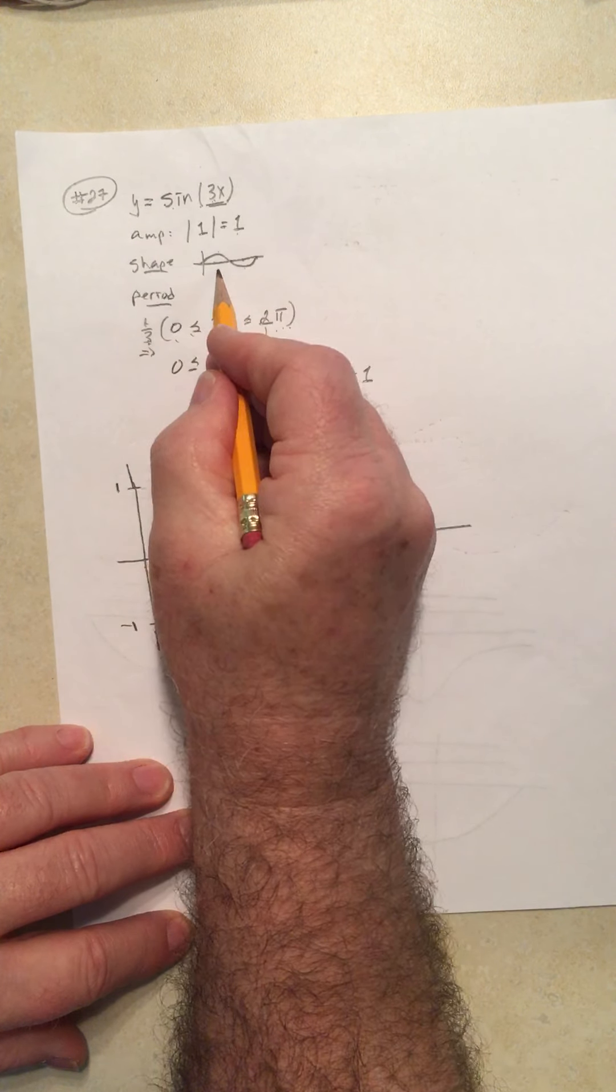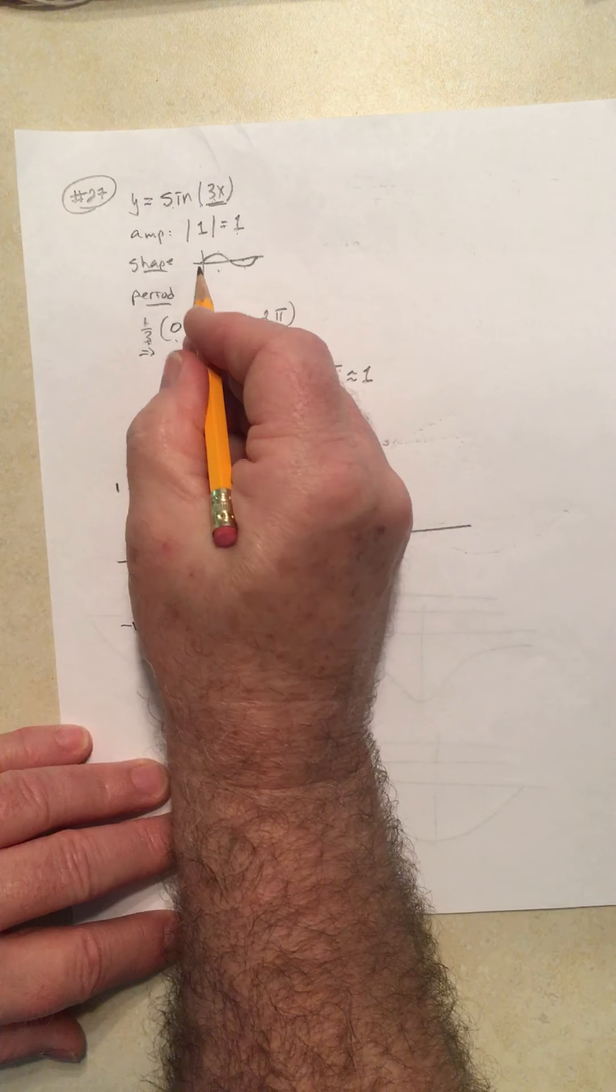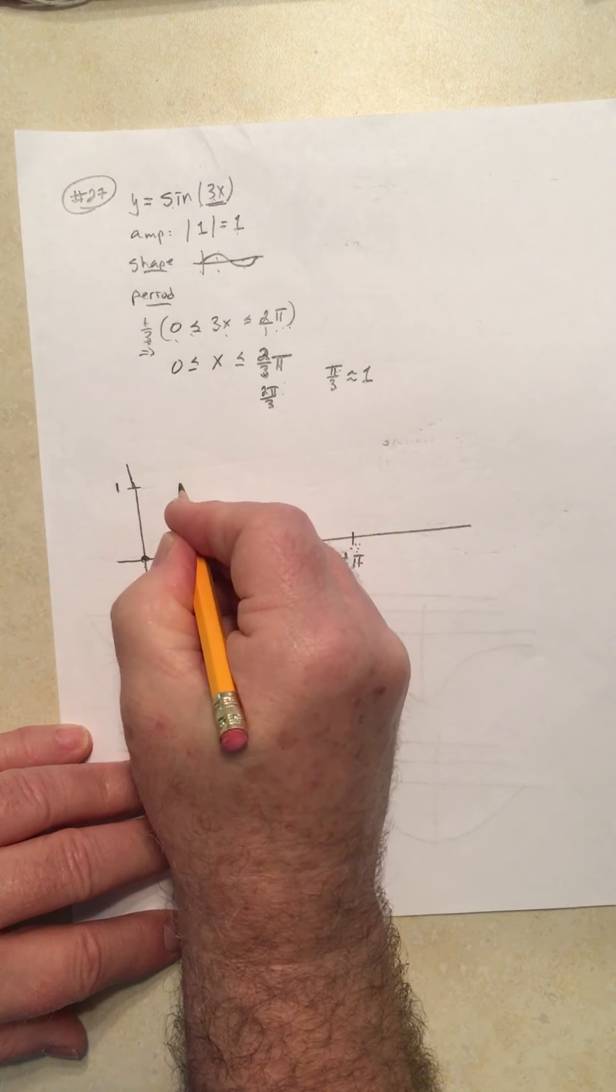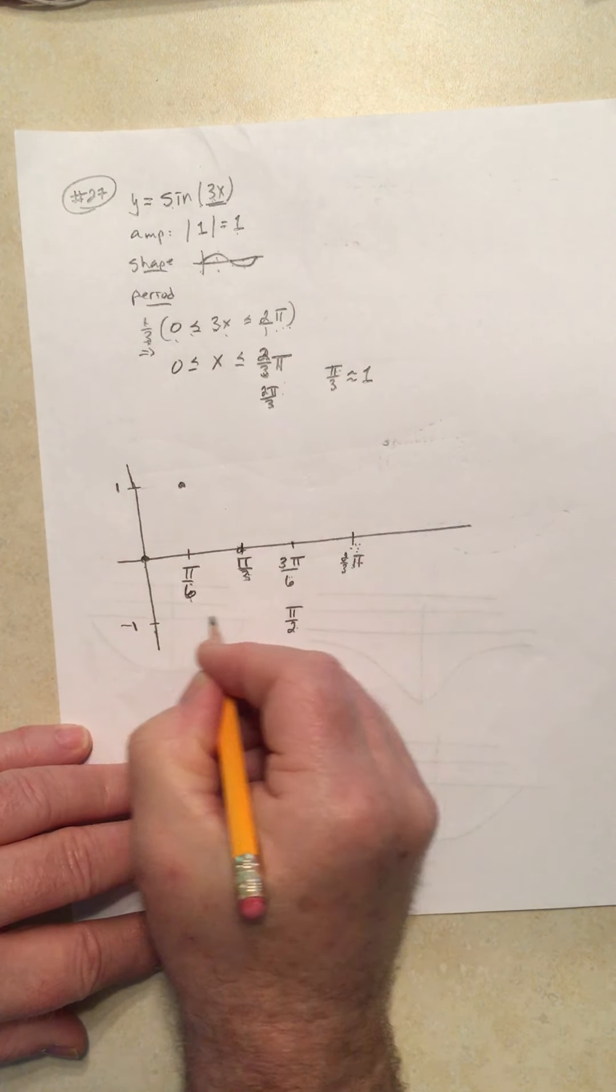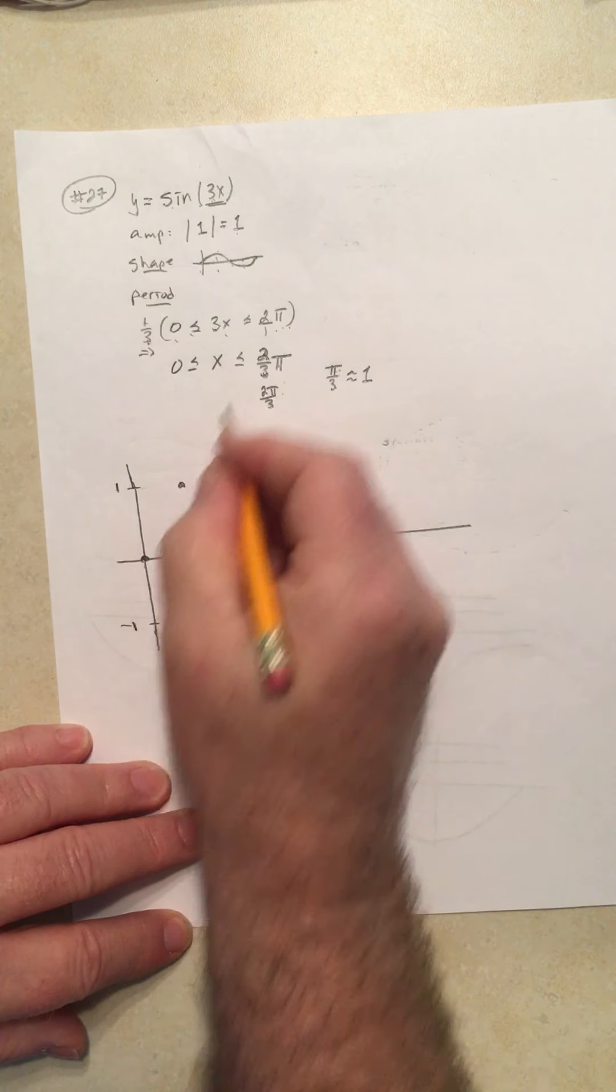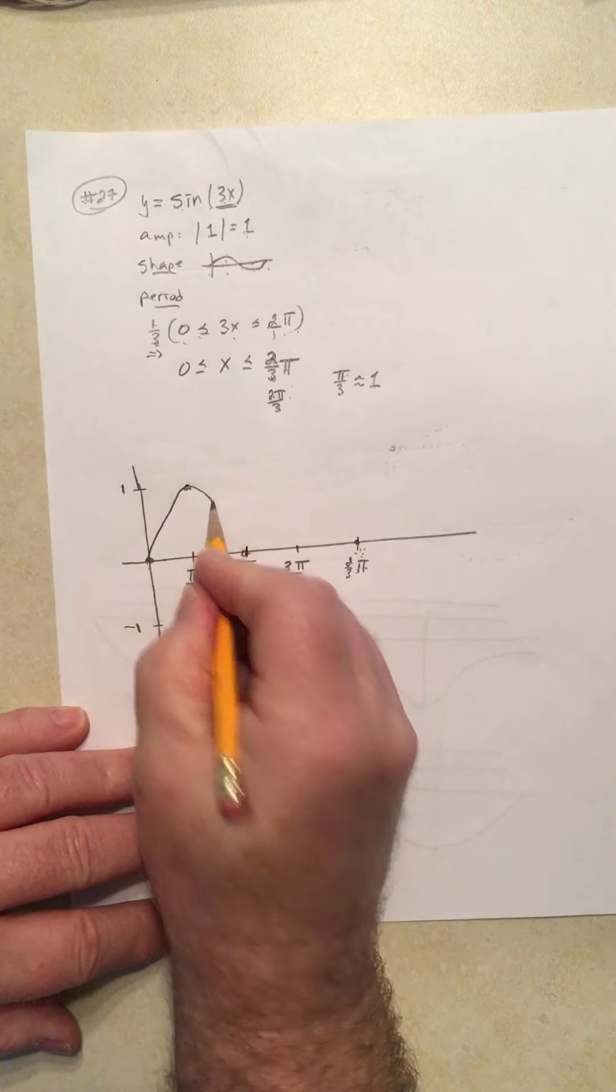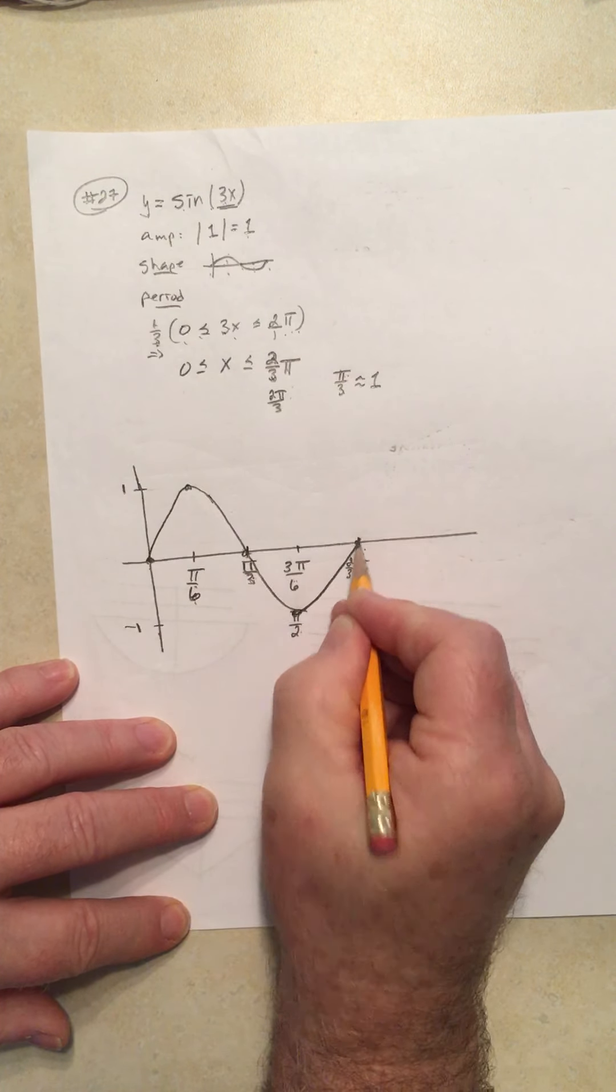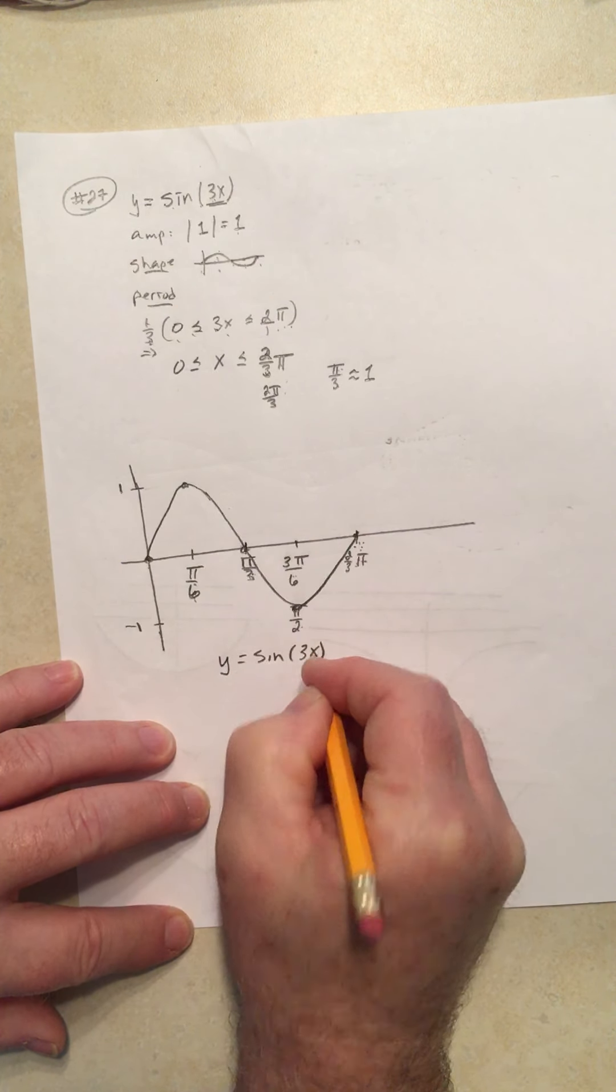Now we sketch the sine curve in that interval. So sine starts at node, then goes to peak, then go back to node, goes to trough, and then goes to node again. And so sketch that in, try to make it look nice. And so that's the sketch of the graph, y is equal to sine of 3x.